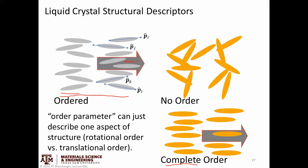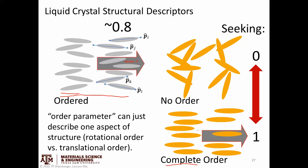An important point is that an order parameter can be used to describe just one aspect of the structure. I could have one order parameter talking about rotational or directional order, and a different order parameter talking about translational order. We'll give examples of both. We're seeking an order parameter that goes between zero and one to describe this system.